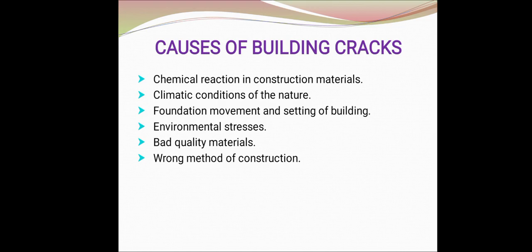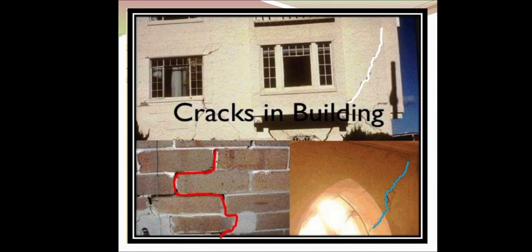The main causes of building cracks are: chemical reaction in construction material, climate conditions of nature, foundation movement and settlement of building, environmental stress, bad quality of material, and wrong method of construction. These are the mainly causes of building cracks.